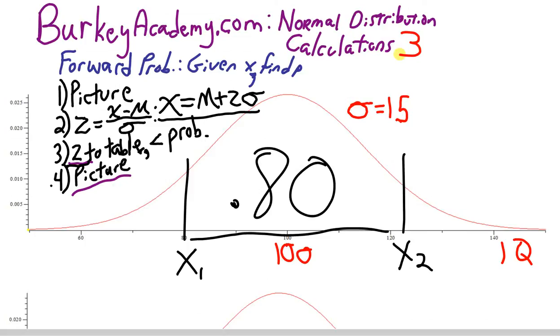If you have your normal distribution table out, and your calculator out, here we're going to solve the most complicated version of these normal distribution problems. Instead of a forward problem, this is a version of what I call a backward problem. Suppose I gave you a probability, so instead of a forward problem where you're given an x and find a probability, in a backward problem I give you a probability and ask you to find x. Here we're going to be finding two x's.